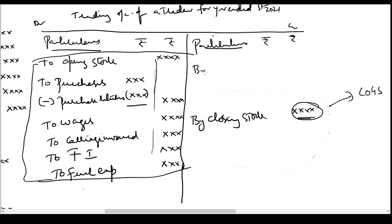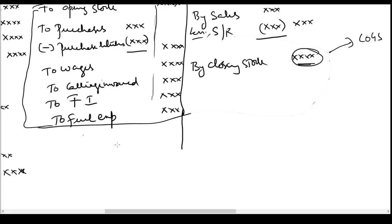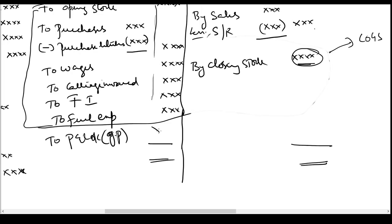We credit the trading account with sales — writing 'by sales' in the inner column, less sales returns. The sales returns entry debits sales account, reducing its credit balance, so sales returns are shown as a deduction in the trading account. To calculate gross profit, we total the credit side, subtract the debit side, and transfer the gross profit to the P&L account — writing 'to P&L account' as the balancing figure. If there is a gross loss, we write 'by P&L account' on the credit side.